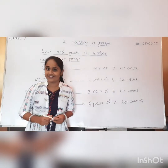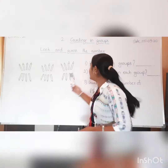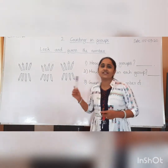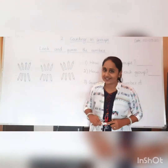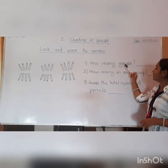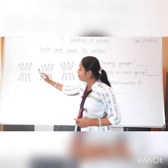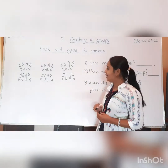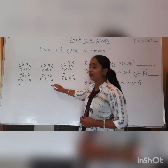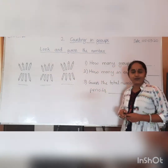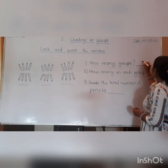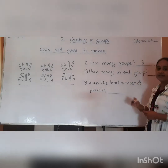Have you understood? Students, let us now solve this example. There are some pencils on the board. These pencils are arranged in groups. Students, look here. The first question is: how many pencil groups are there? One group, two groups, three groups. We have a total of three pencil groups.